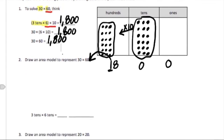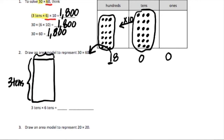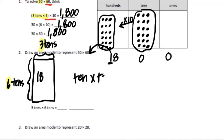Now to draw an area model. An area model means I'm going to find the area of a rectangle that has the dimensions of thirty times sixty. That's three tens, or six tens times three tens. That would be six times three, which would give me eighteen. And then ten times ten, which equals one hundred.